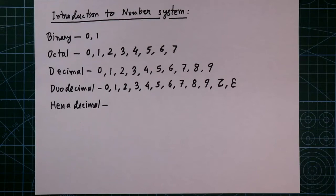So, in duodecimal number system, the total number of unique digits is 12. That is 0 to inverted 3.